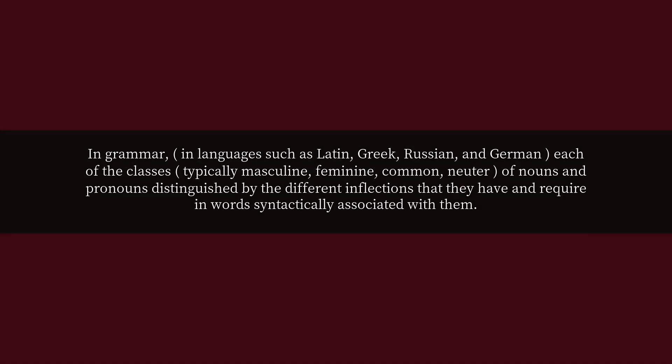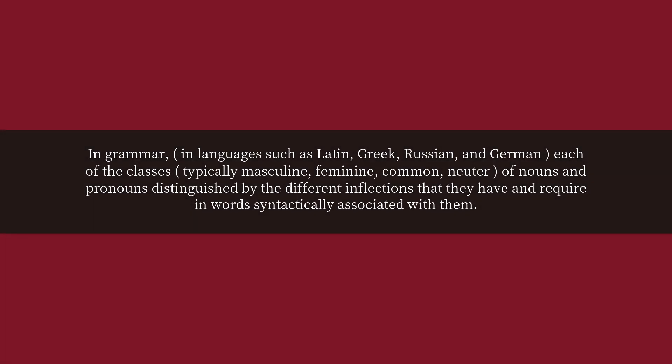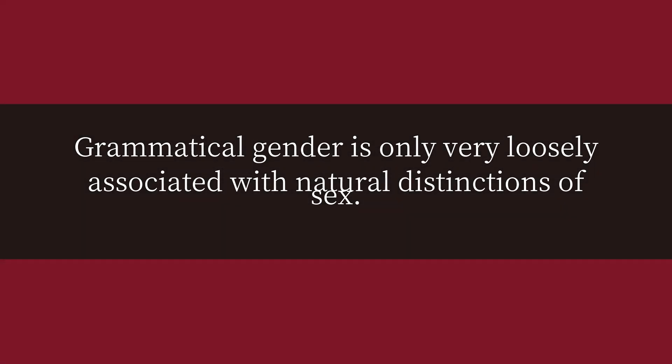In grammar, in languages such as Latin, Greek, Russian, and German, each of the classes — typically masculine, feminine, common, or neuter — of nouns and pronouns distinguished by the different inflections that they have and require in words syntactically associated with them. Grammatical gender is only very loosely associated with natural distinctions of sex.